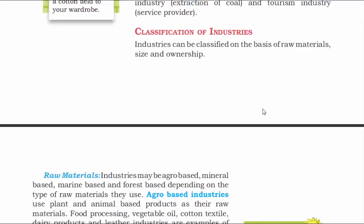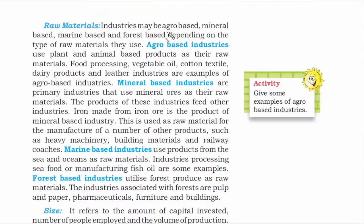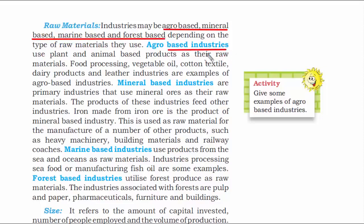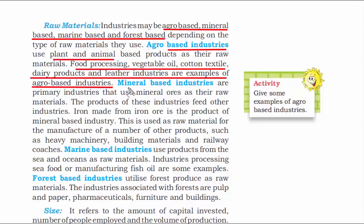The next topic is classification of industries. Industries are classified on the basis of three things: raw materials, size, and ownership. First, raw materials. Industries are labeled as agro-based, mineral-based, marine-based, and forest-based based on their raw materials. If you see agro — agriculture — everything has to deal with plants and animals. Mineral-based industries deal with iron made from iron ore and other sorts of minerals, which are used for manufacturing heavy machinery, buildings, materials, and railway industries.